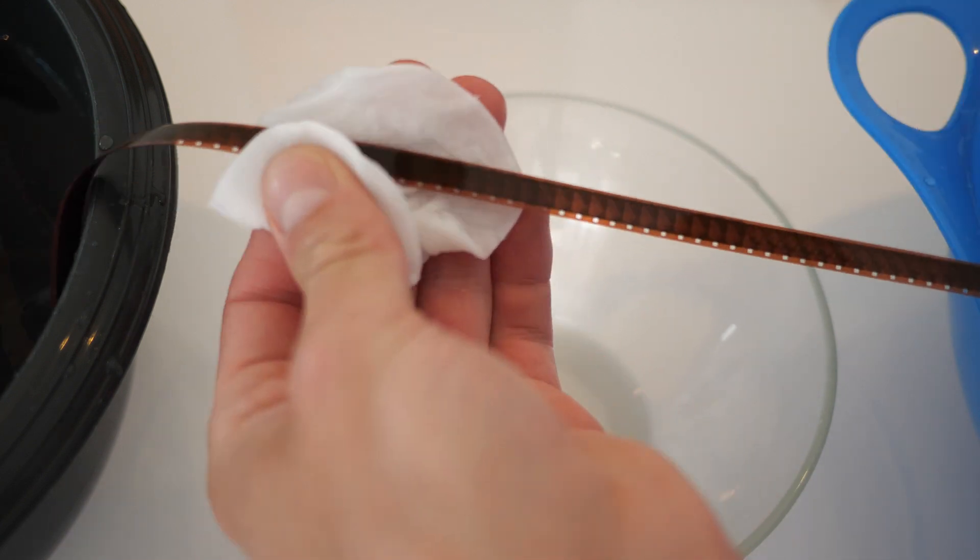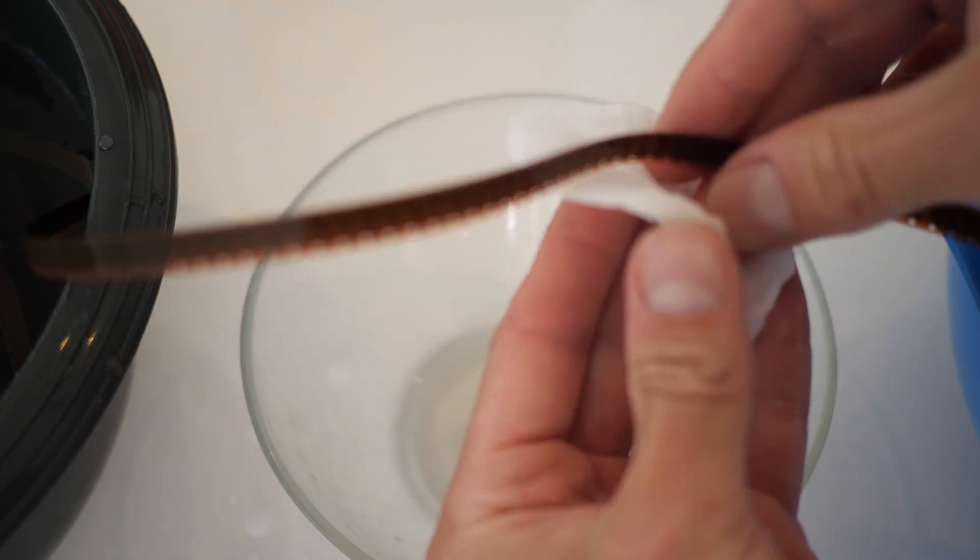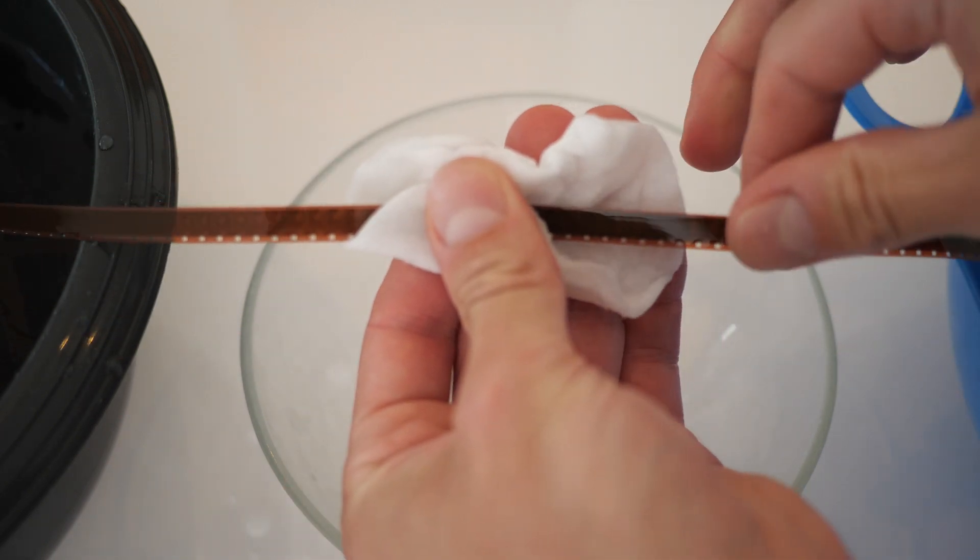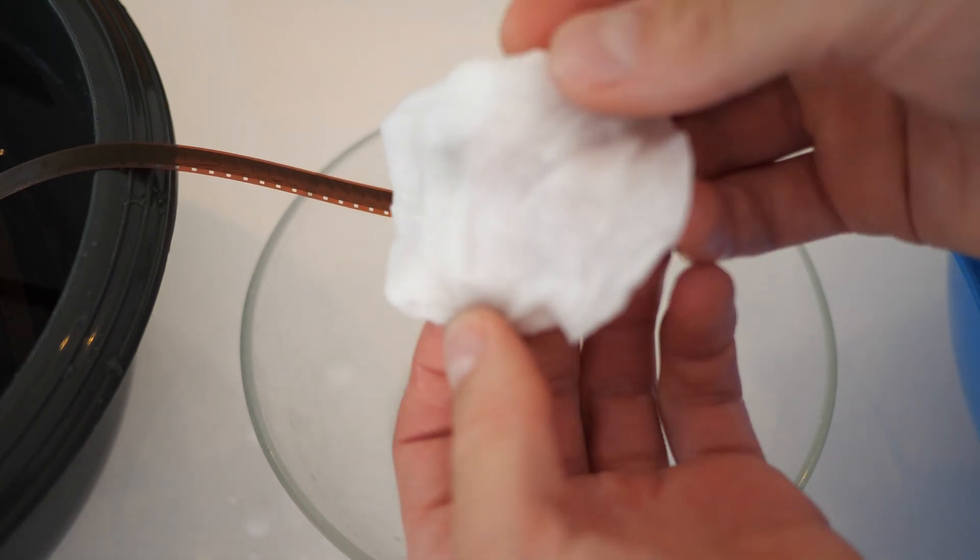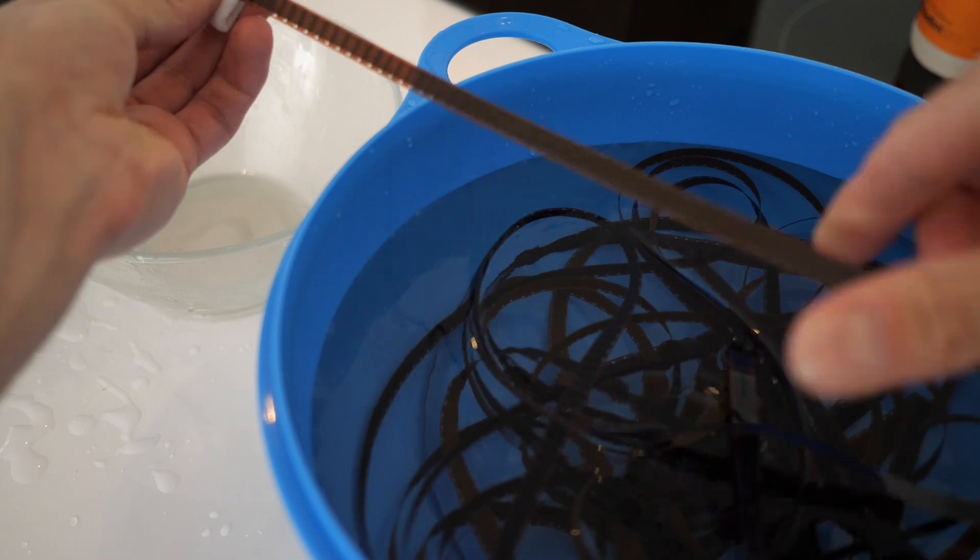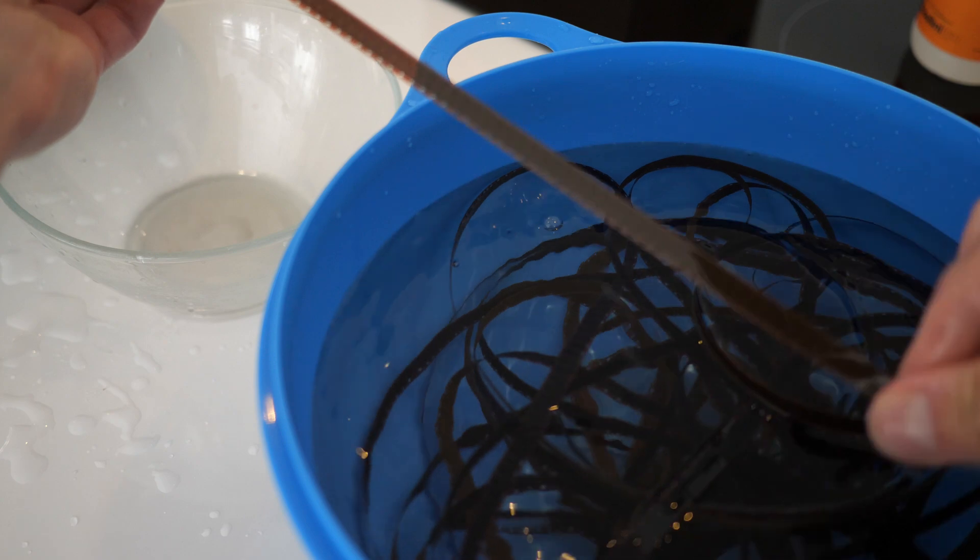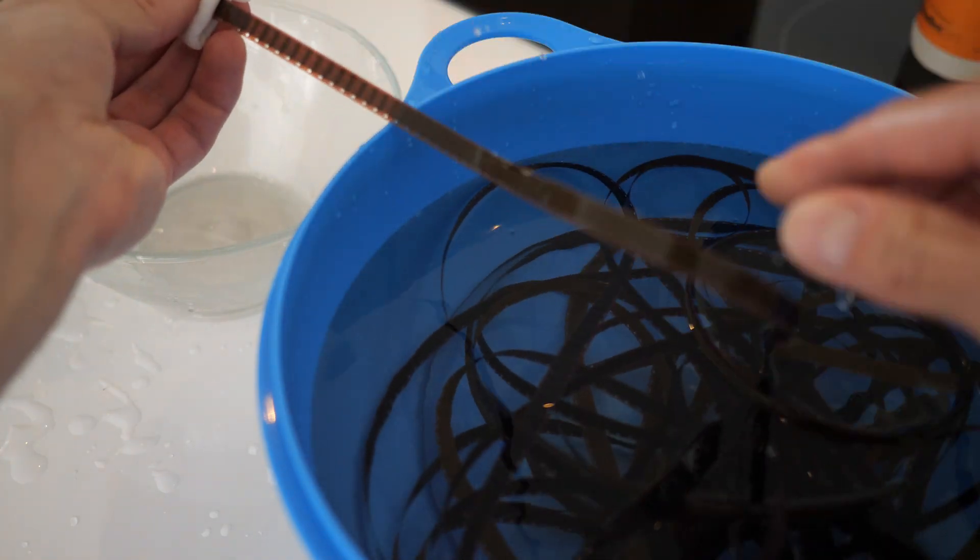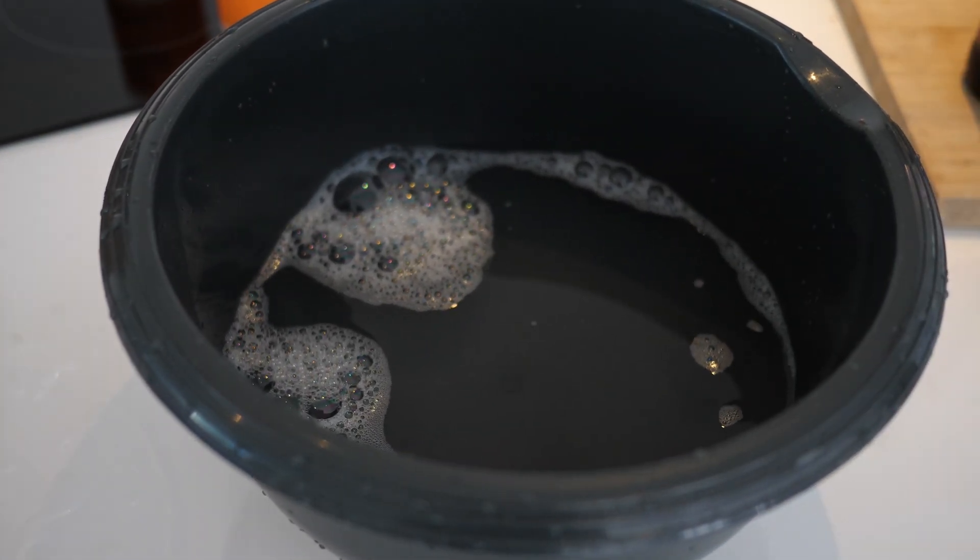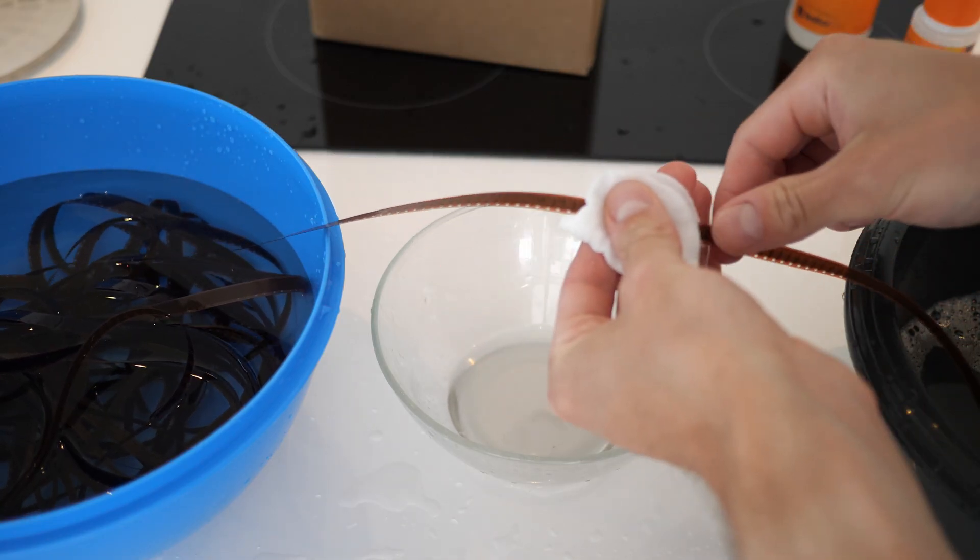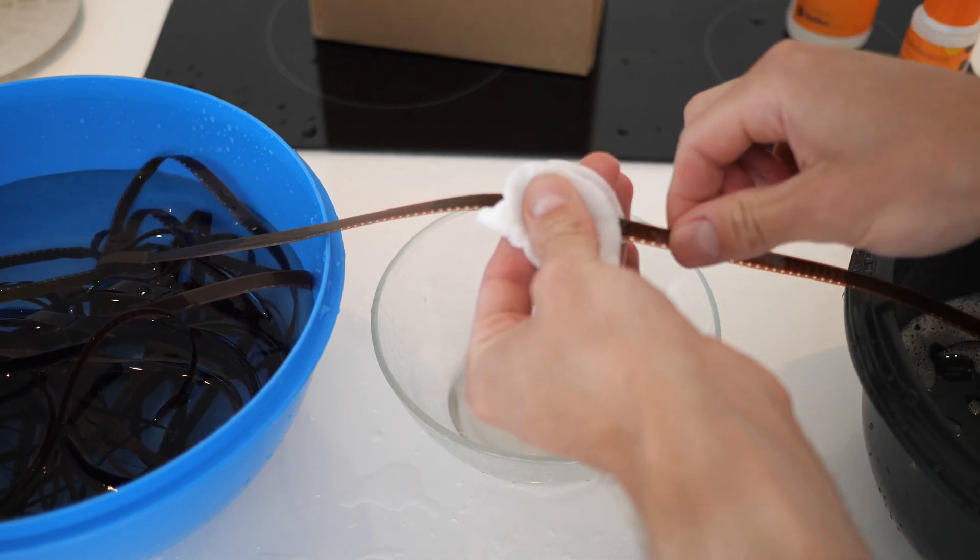You immediately notice how much cleaner the pad remains now. Once you get used to the process, you will get quite fast with this procedure. It's very important to keep the film wet throughout the process. Otherwise, the remaining ramjet traces will dry and can't be removed anymore. In total, you should do around 4 or 5 cleaning cycles to really get rid of all the ramjet. Take this task seriously because you will see even the tiniest residues of ramjet in the final image.